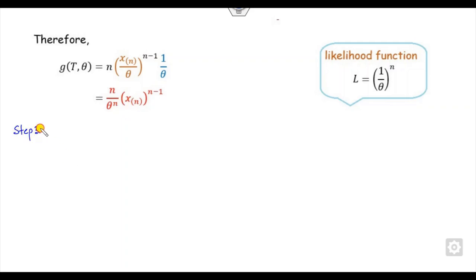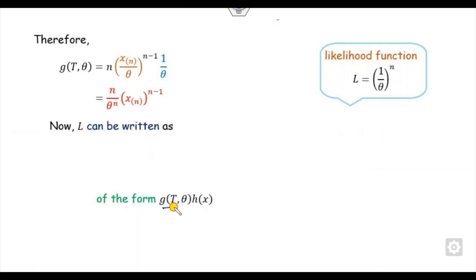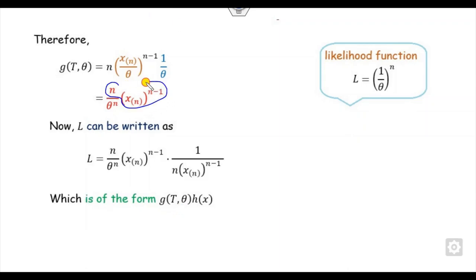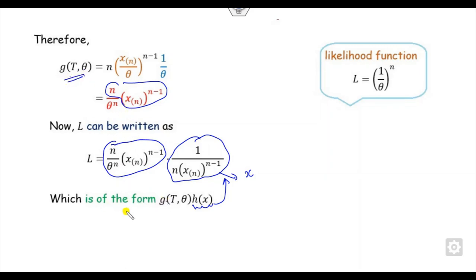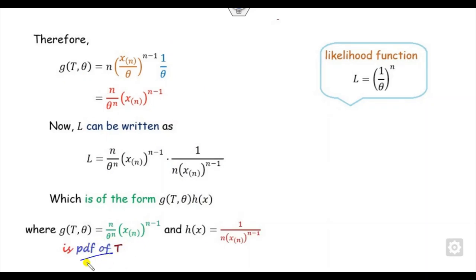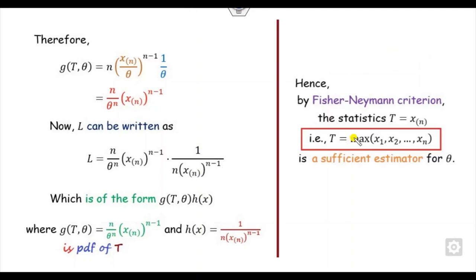Step 3: express L in terms of g (the PDF of T). We have L = 1/theta^n. Multiplying and dividing by the appropriate parts, we can write L = [n · x_(n)^(n-1) / theta^n] · [1/n · x_(n)^(-(n-1)}], where the first part is g(t, theta) — the PDF of x_(n) — and the second part h(x) is totally independent of theta. Since L is written in the required form, by the Fisher-Newman criteria, T = x_(n) = max(x_1, ..., x_n) is the sufficient estimator for theta.